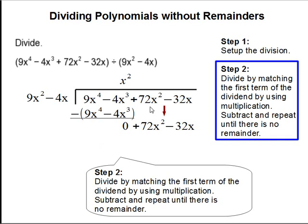Then we bring down the rest of our polynomial. So then we've got to think of a number that multiplies 9x² that gives you 72x². And in this case, it's going to be 8.